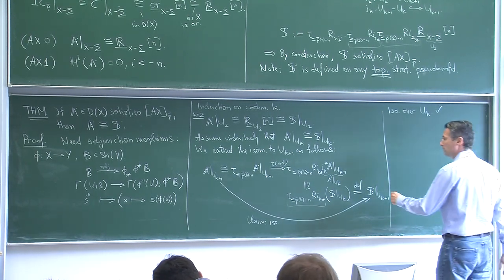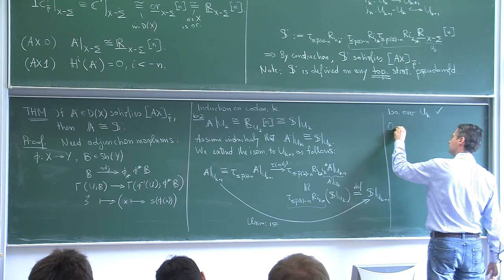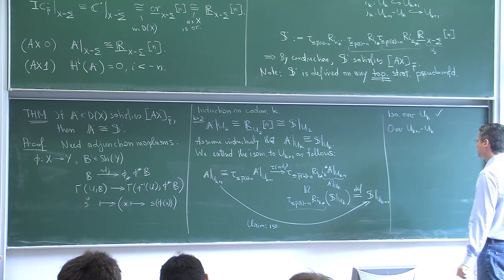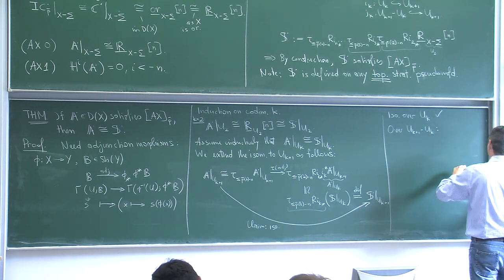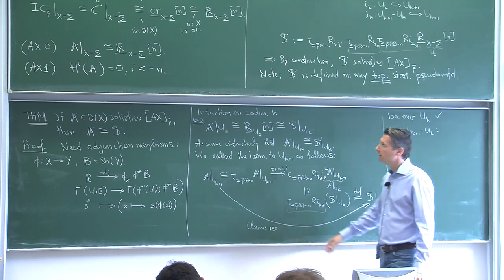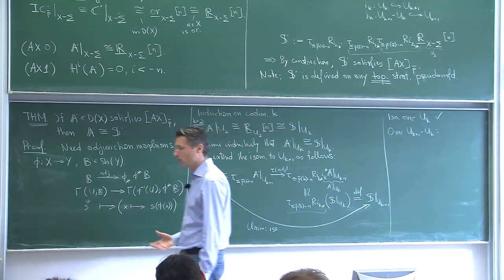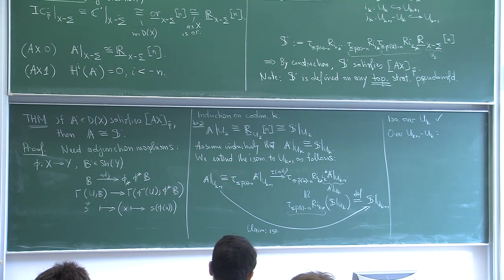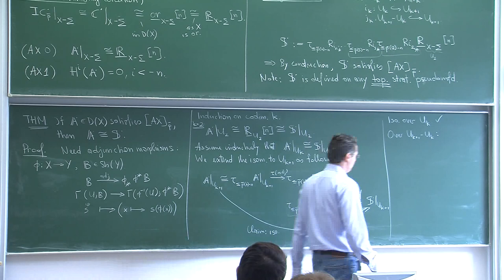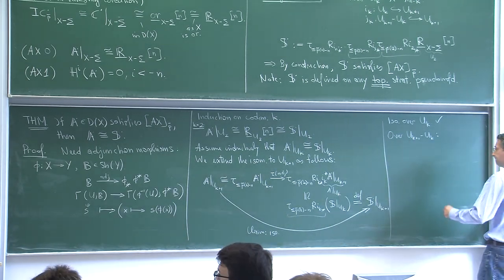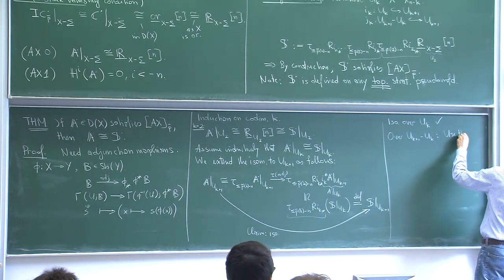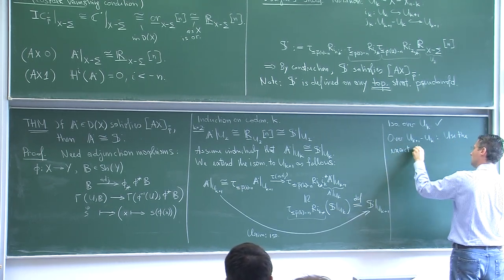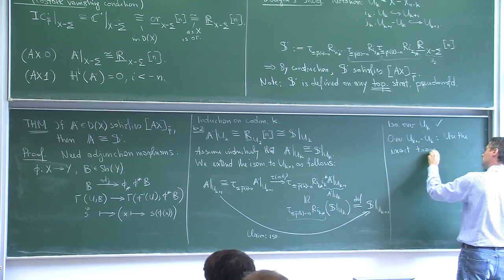We have constructed at least a map over U_{k+1} from A to S. What remains is to show this is an isomorphism. It is already an isomorphism over U_k by the induction hypothesis, so it really remains to check this over U_{k+1} minus U_k. Here we bring in the co-stalk vanishing axiom — Axiom 3 — which we haven't used yet.